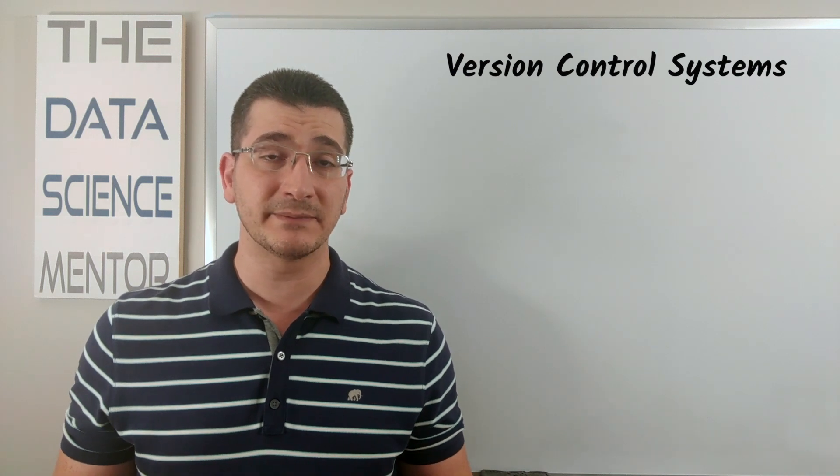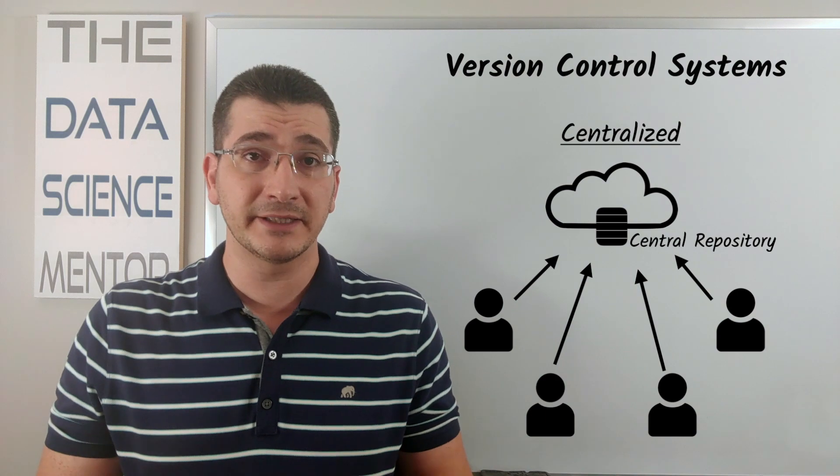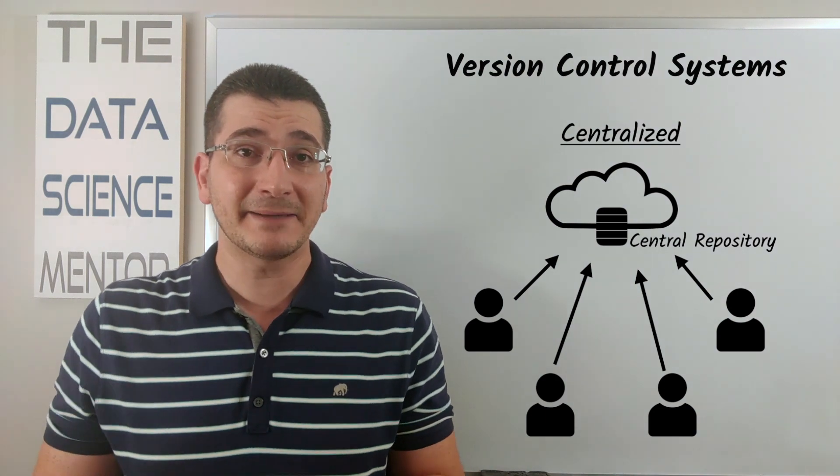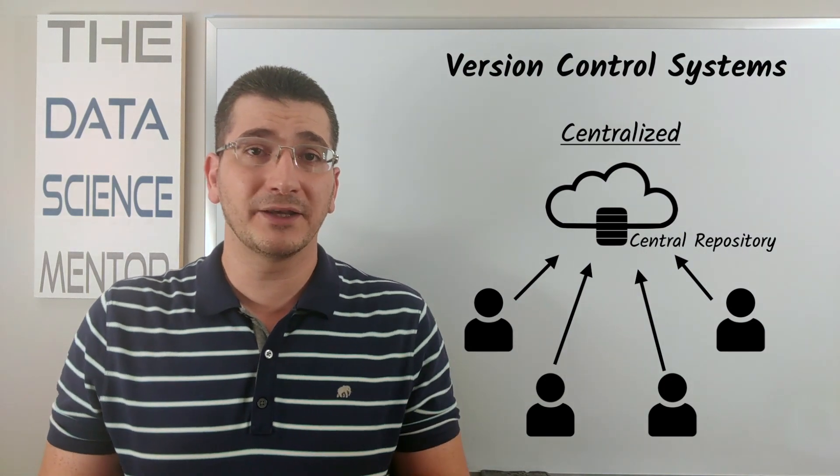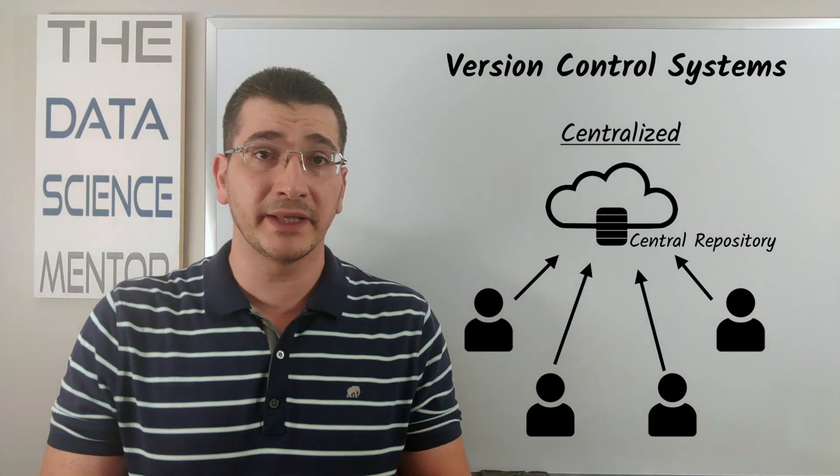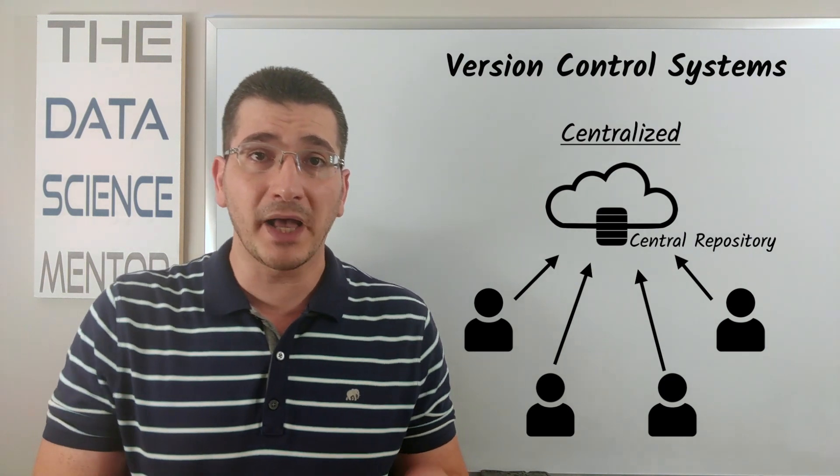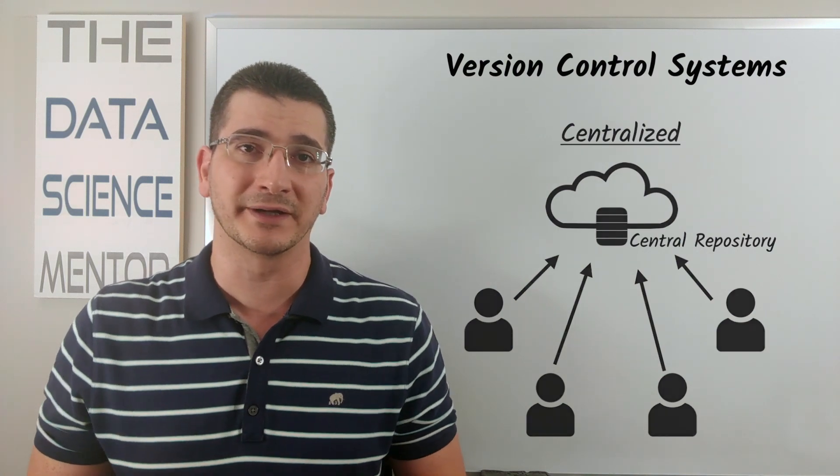While many version control systems are centralized, meaning that for each project you would have a single central copy of the project repository sitting somewhere, most likely on some remote server, whether you're working on a project individually or in a team, you would need to be connected to the project's central repository to be able to work on your project and save your changes or your work.